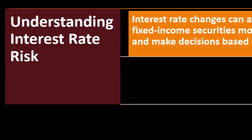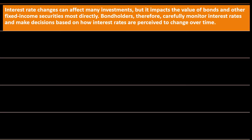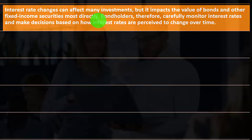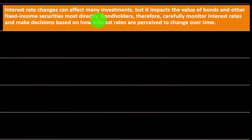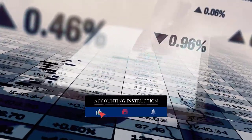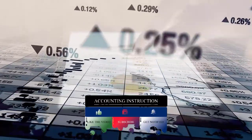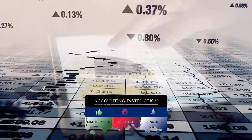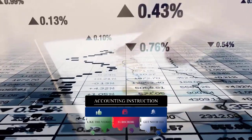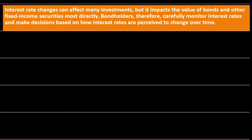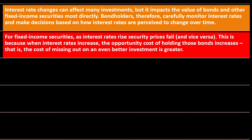Interest rate changes can affect many investments, but they impact the value of bonds and other fixed income securities most directly. With stocks, you're not really locking in a rate of return — you'll be based on the market. If you buy bonds, you're saying you want a fixed rate of return, which has pros and cons. Bondholders therefore carefully monitor interest rates and make decisions based on how interest rates are perceived to change over time.